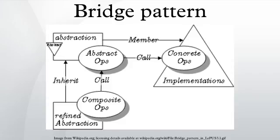The bridge pattern is a design pattern used in software engineering which is meant to decouple an abstraction from its implementation so that the two can vary independently. The bridge uses encapsulation, aggregation, and can use inheritance to separate responsibilities into different classes.